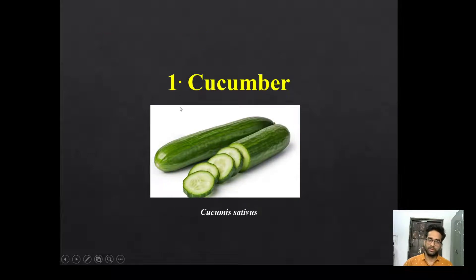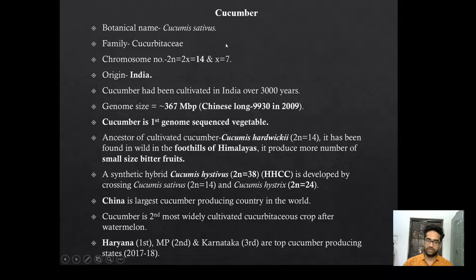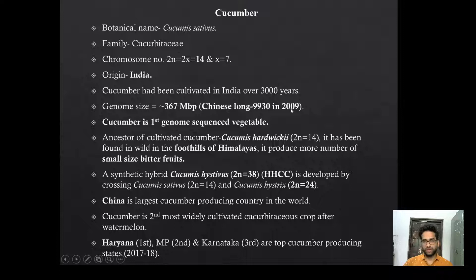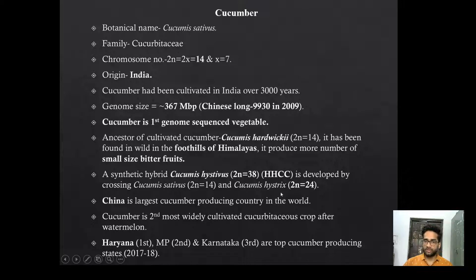Now the first Cucurbit we are going to discuss is cucumber — Cucumis sativus. Chromosome number is 14. Origin is India. The genome size of cucumber is 367 Mbp. The line used for genome sequencing in cucumber is Chinese Long 9930. Cucumber is the first vegetable crop whose genome was sequenced, in 2009. China is the largest producer of cucumber; India is second largest, and Haryana is the top-most producing state.